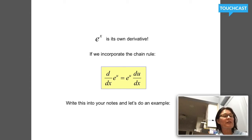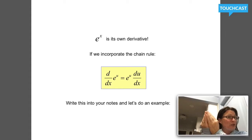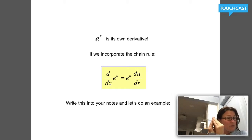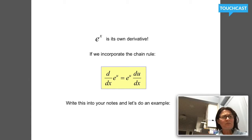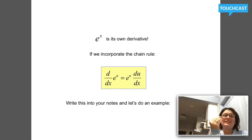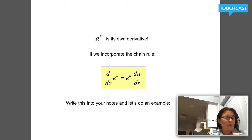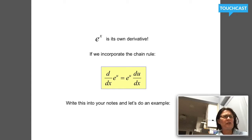Now that we know the chain rule, we want to make sure that when we learn our derivative rules, we're including the chain rule. So the derivative with respect to x of e to the u — e raised to some function of x — is e to the u, that same function, multiplied by du/dx. What I think in my head is: the derivative of e to the something is e to the something, the exact same function, but multiplied by the derivative of the exponent. Make sure that's in your notes.